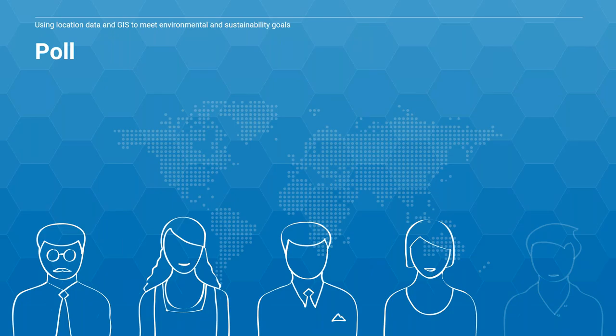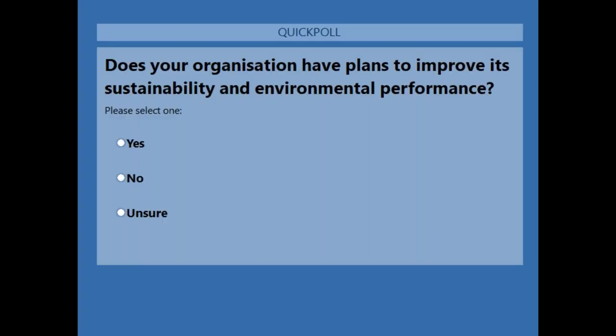The second question: does your organisation plan to improve its sustainability and environmental performance? It's a common subject around how organisations — especially housing associations — can improve the energy performance of existing homes by 2025. We've got an astounding 100% — I don't think we've ever had 100% in one of these polls. That's really good to see.